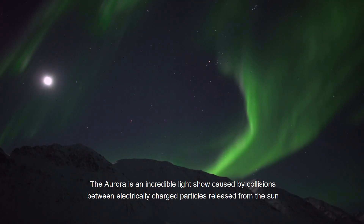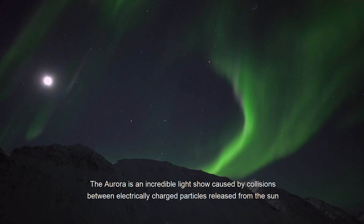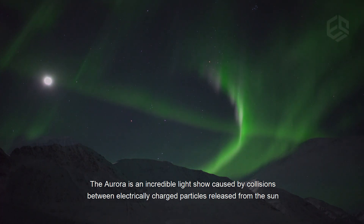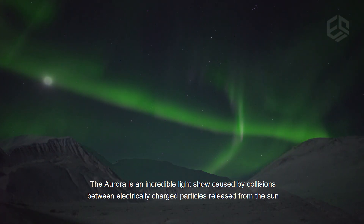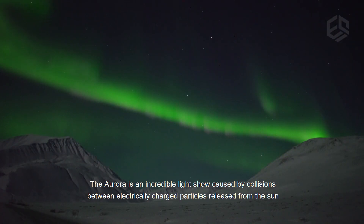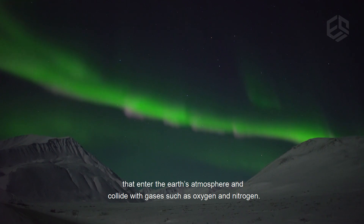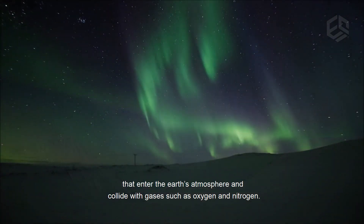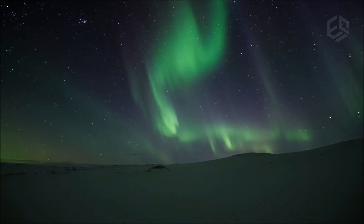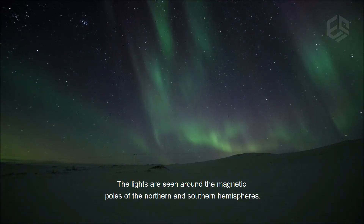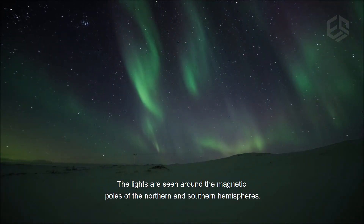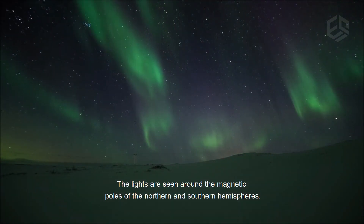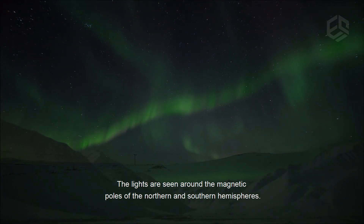The Aurora is an incredible light show caused by collisions between electrically charged particles released from the sun that enter the Earth's atmosphere and collide with gases such as oxygen and nitrogen. The lights are seen around the magnetic poles of the northern and southern hemispheres.